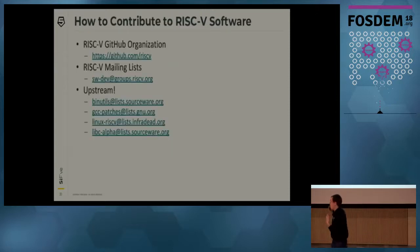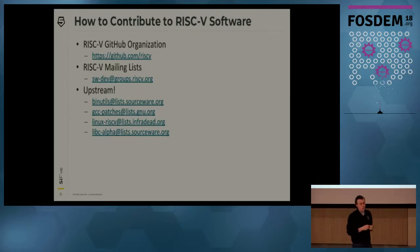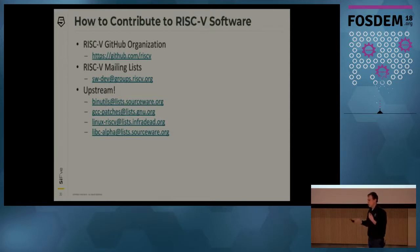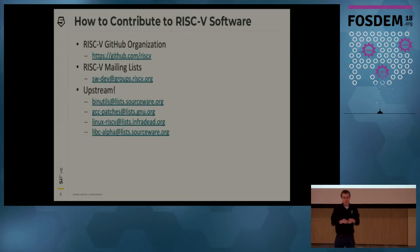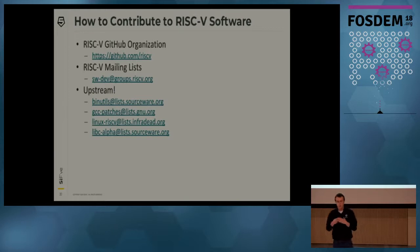For the last few years we've been maintaining forks of all these projects in our own GitHub organization at github.com/riscv. There's also a RISC-V mailing list you can use to contribute. But now that we're upstream, development is moving largely to the official repositories — you can go to the binutils mailing list or the Linux mailing lists and contribute to the RISC-V port just like you would with any other project. We're really excited to have people start contributing, so please pick your favorite project and start working on it.